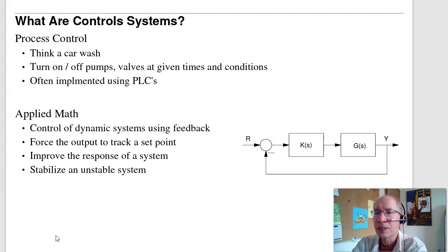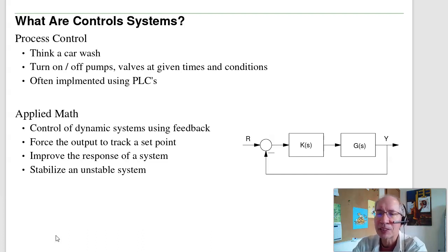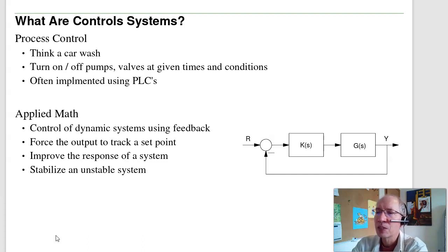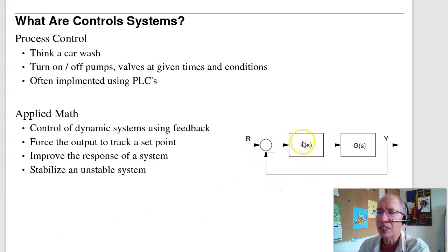Another definition of controls is applied math. If you have a dynamic system — like a bicycle or airplane — how do you control the output, keep an airplane flying level or keep the bicycle upright, using feedback? Controls also means the analysis of feedback control systems: how to design a compensator to make the system behave better and improve the response.